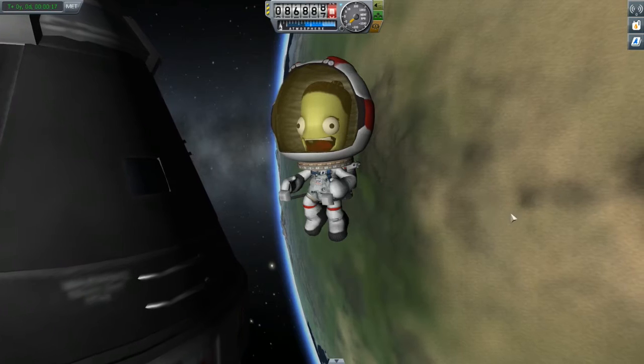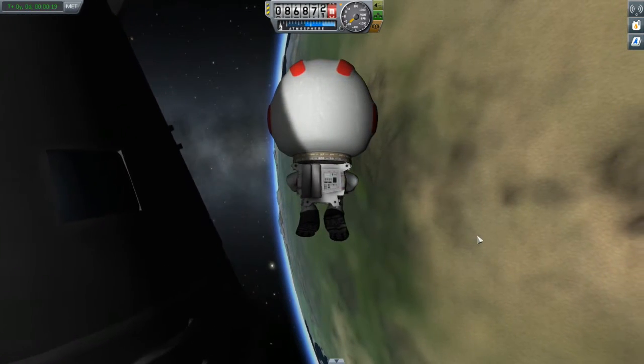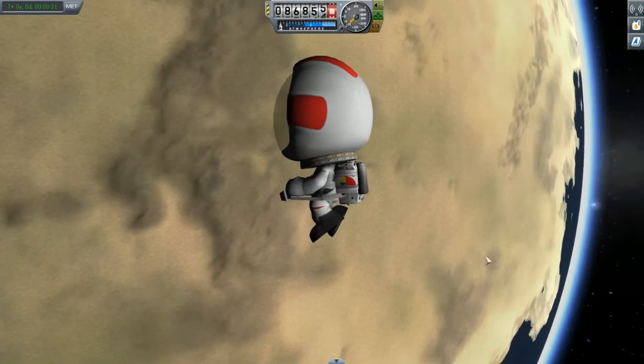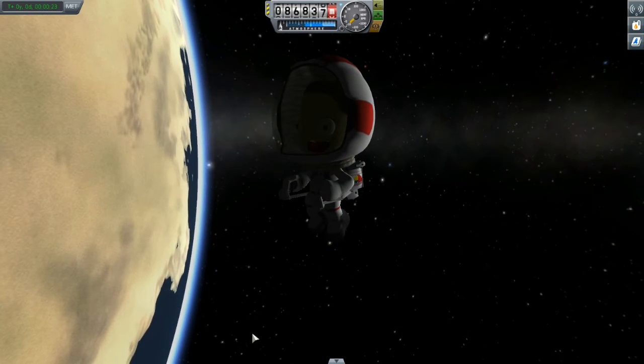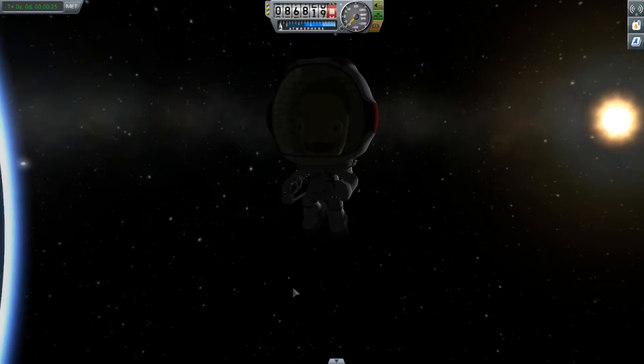Hi, Mike Abin here with a KSP tutorial. At the conclusion of the last tutorial, we left Valentina in orbit around Kerbin along with her vehicle, the Kerbal 1.